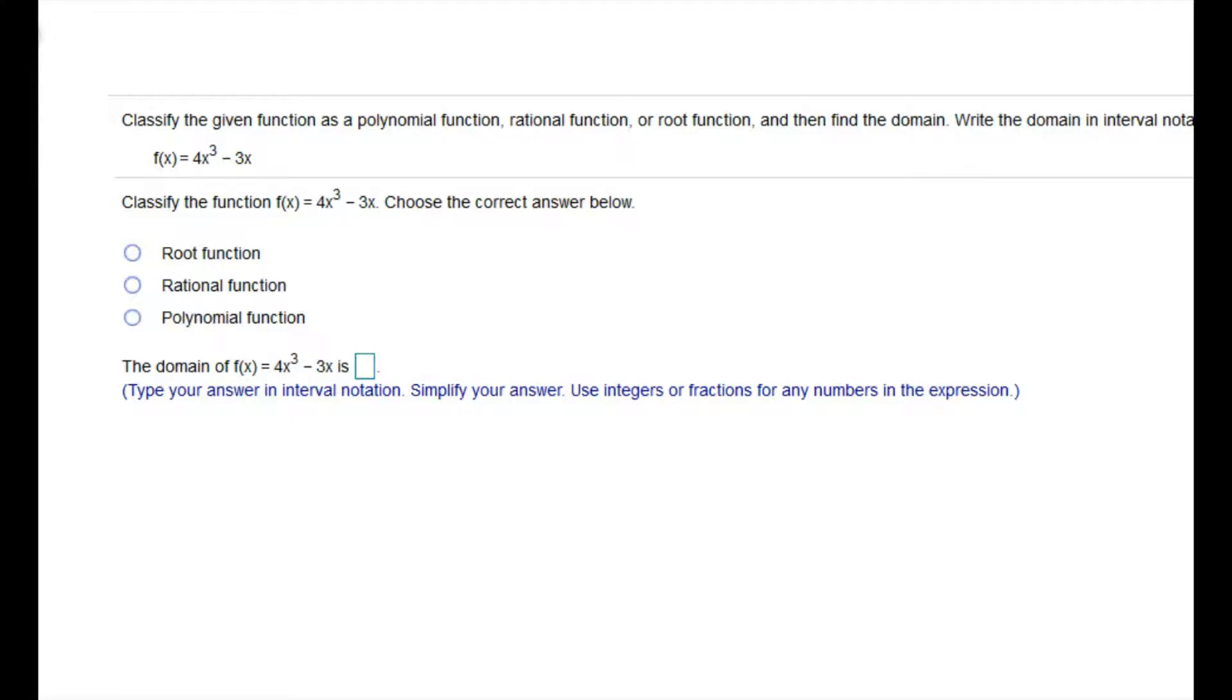So for this example, looking at it, I don't see any radicals, and I don't see any fractions. So I'm looking at the powers on x, and I've got a power of 3 on this one, and a power of 1 on this one. And those are both whole numbers. So I would classify this as a polynomial.